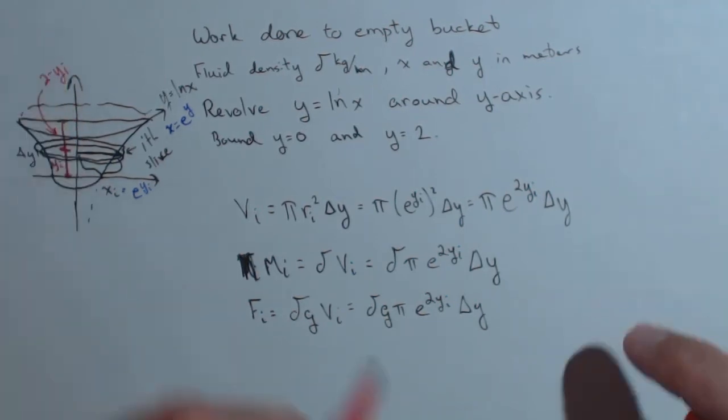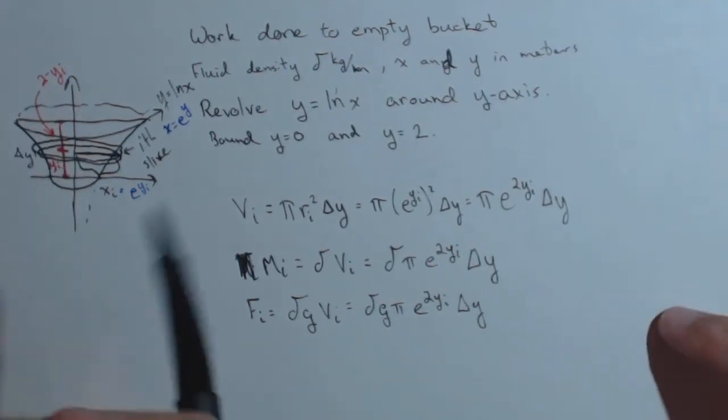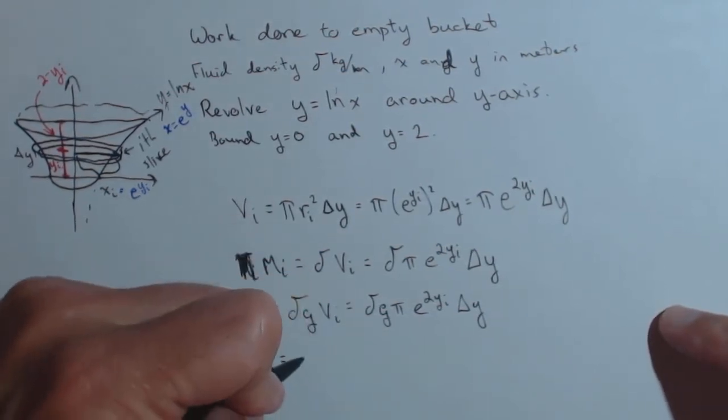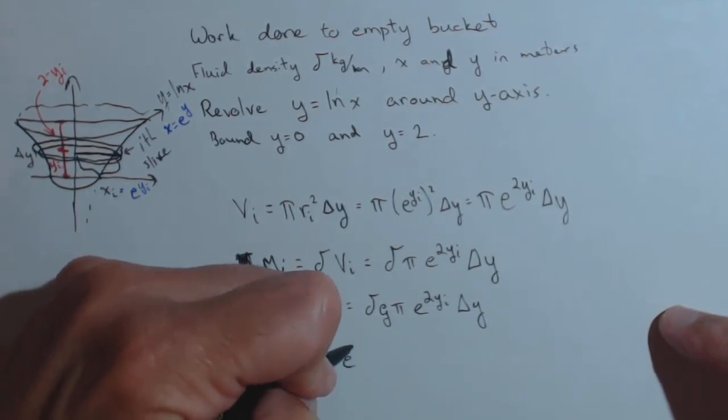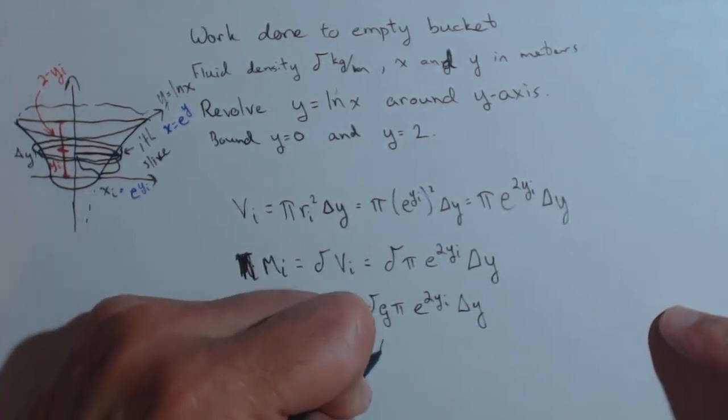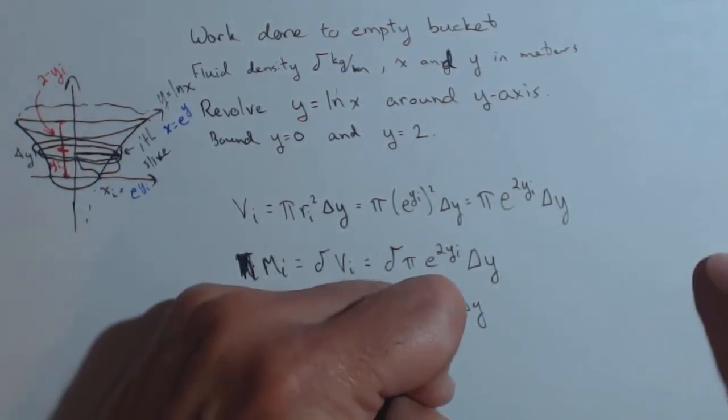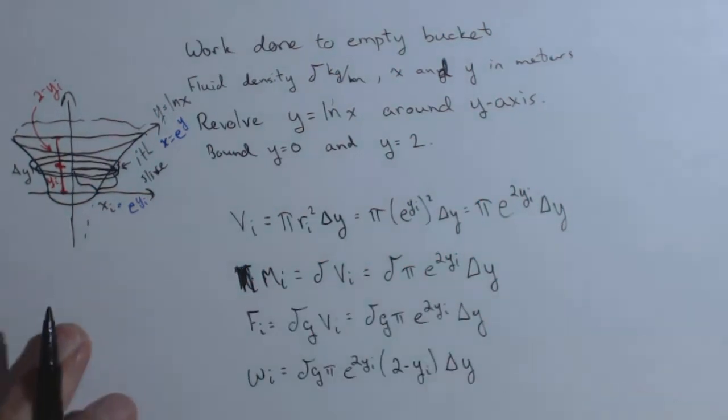That's the distance we need to move to turn our force into the work on the i-th slice. We got delta*g*pi*e^(2y_i). And then the distance it's getting moved is 2 minus y_i. So the work is delta*g*pi*e^(2y_i)*(2-y_i)*delta y.